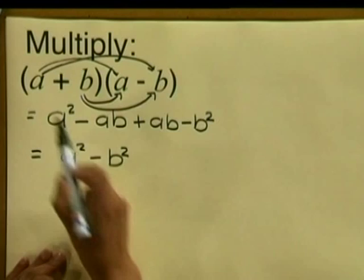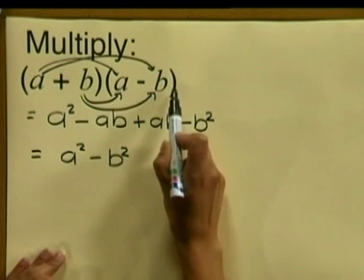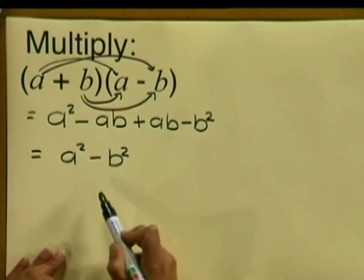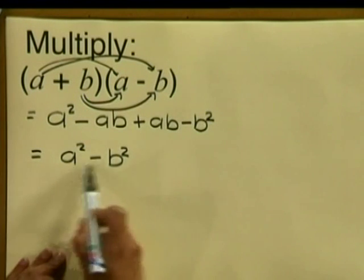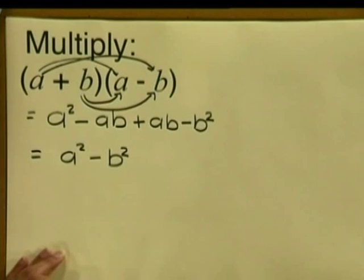So multiplying a plus b by a minus b we get a squared minus b squared. We are back where we started — we have a difference of two squares, and we got there through the process of multiplication.